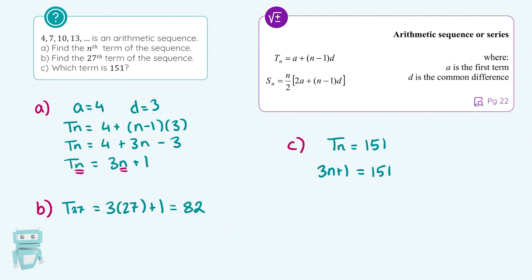And if I solve out for N here, we'll get the term number. And we get N equals 50, meaning the 50th term is equal to 151.